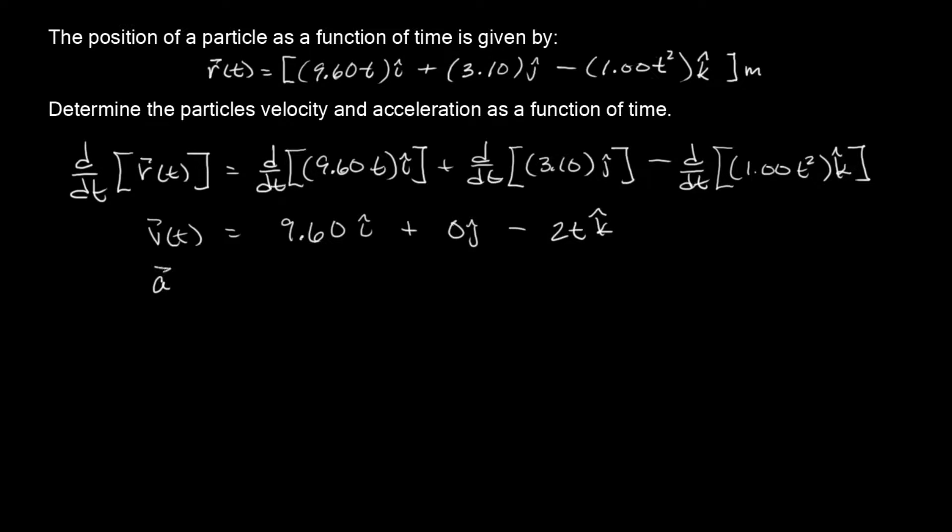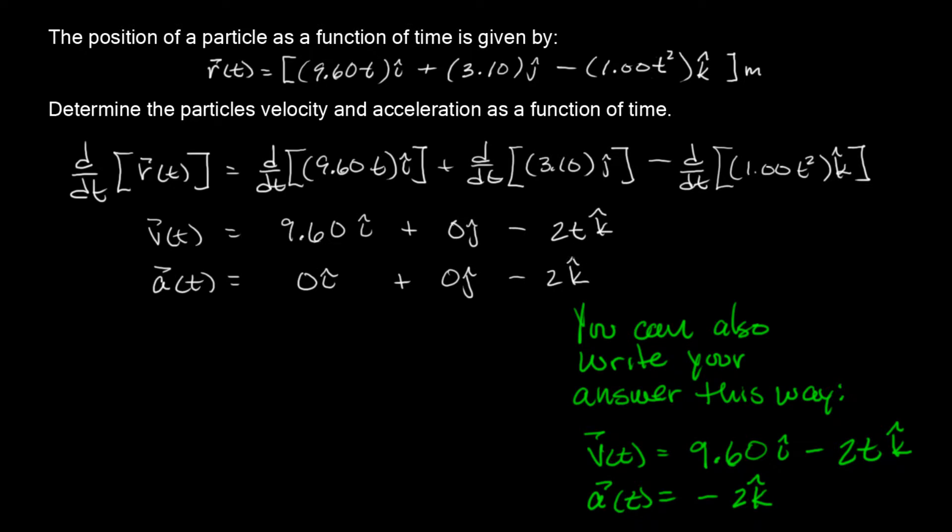And then the acceleration. We're not going to go through the whole thing. Just differentiate this part right here, right? And so this basically is the velocity in the x direction, velocity in the y direction, velocity in the z direction. Okay, so i hat, j hat, k hat. So if you differentiate this as a whole, then you're going to get a 0 i hat. And then the derivative of 0 is just 0 j hat. And the derivative of this right here, negative 2 t, it's just going to give you a negative 2 k hat, right? And then that's it.